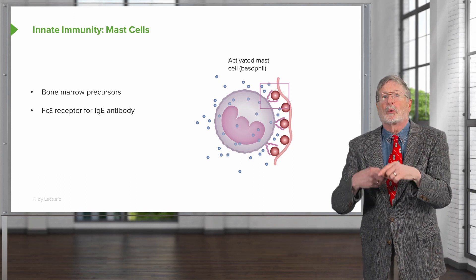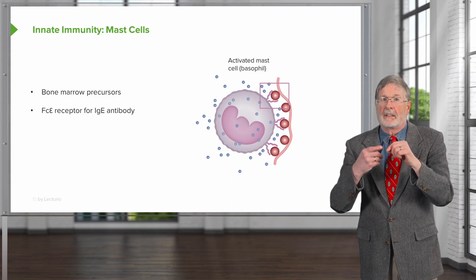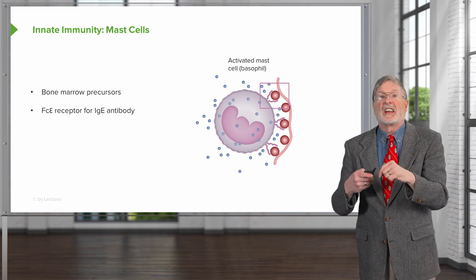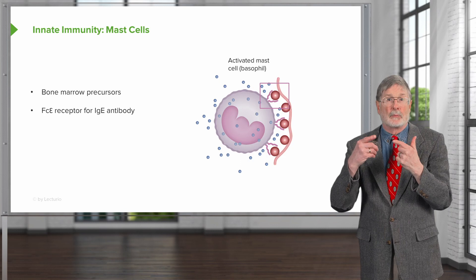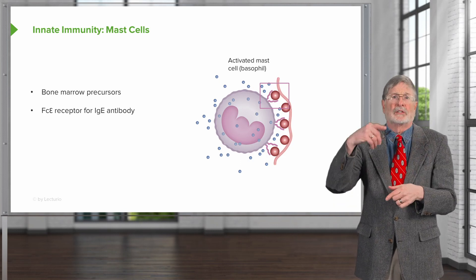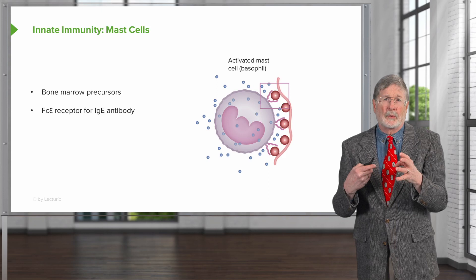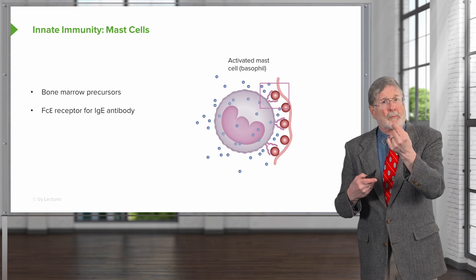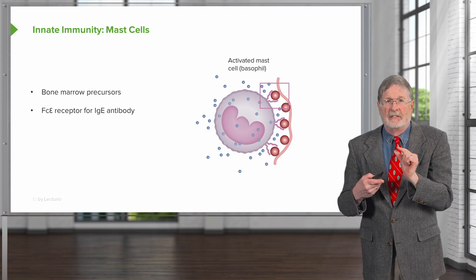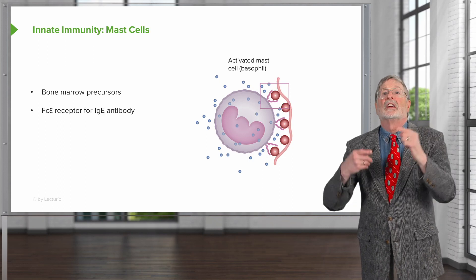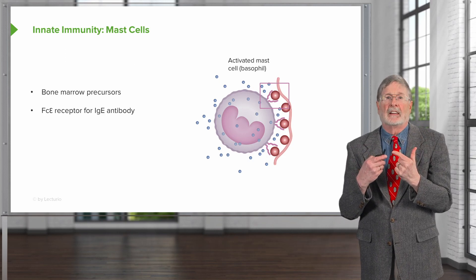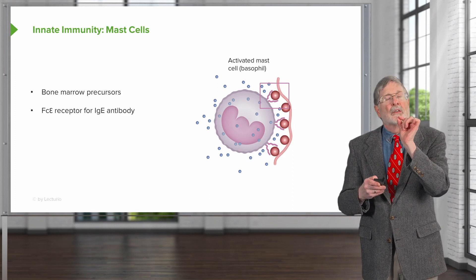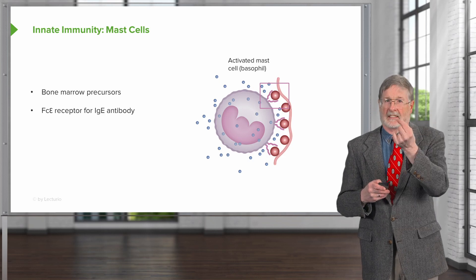Mast cells are preloaded with IgE antibodies with different specificities. When they recognize a polyvalent antigen — polyvalent means the same antigen along a long string of backbone protein, such as cockroach dander, cockroach protein, dusts, or pollens — the IgE already preloaded onto the surface of the mast cell triggers the mast cell to degranulate. You can see the granules being released into that area. That's going to be the major driving force for allergies, anaphylaxis, and asthma.